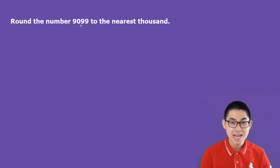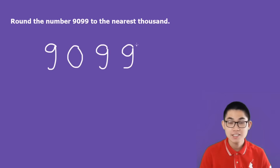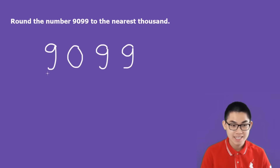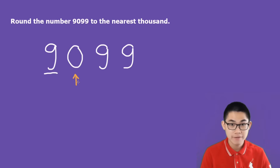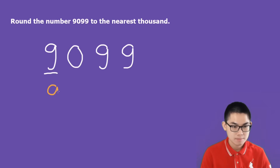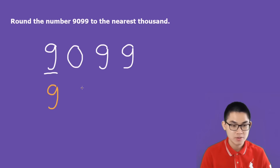Round the number 9,099 to the nearest thousand. This is the ones place, this is the tens place, this is the hundreds place, and this is the thousands place. 0 is smaller than 5, so 9 stays the same. And then all the rest just become 0.